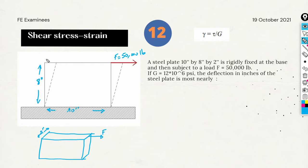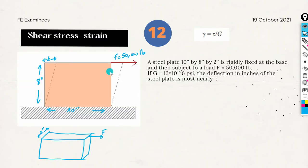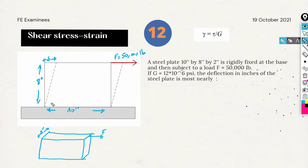We want to calculate the deflection in inches of the steel plate. Before doing anything, let's understand the concepts. We have a plate that was rectangular — a box — and after applying this force, the plate will deform into a parallelogram. So instead of the rectangle, the form will be a parallelogram. This is our final deformation.